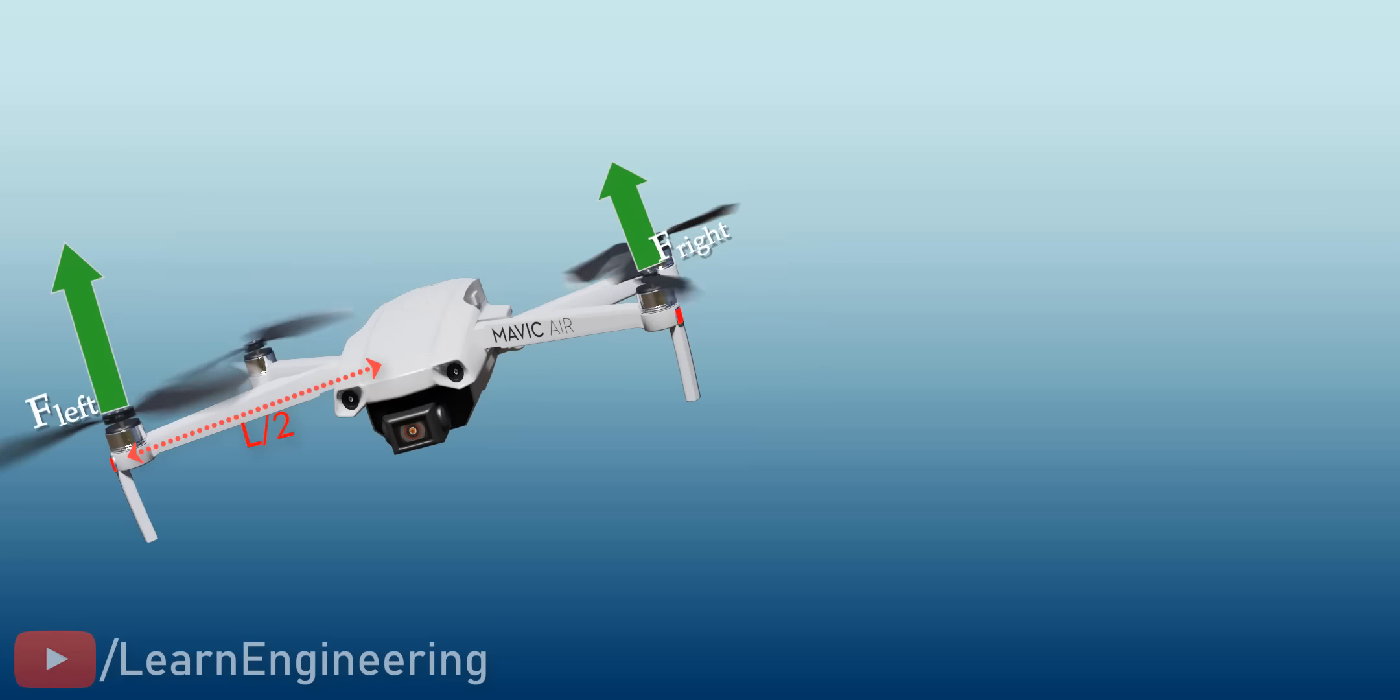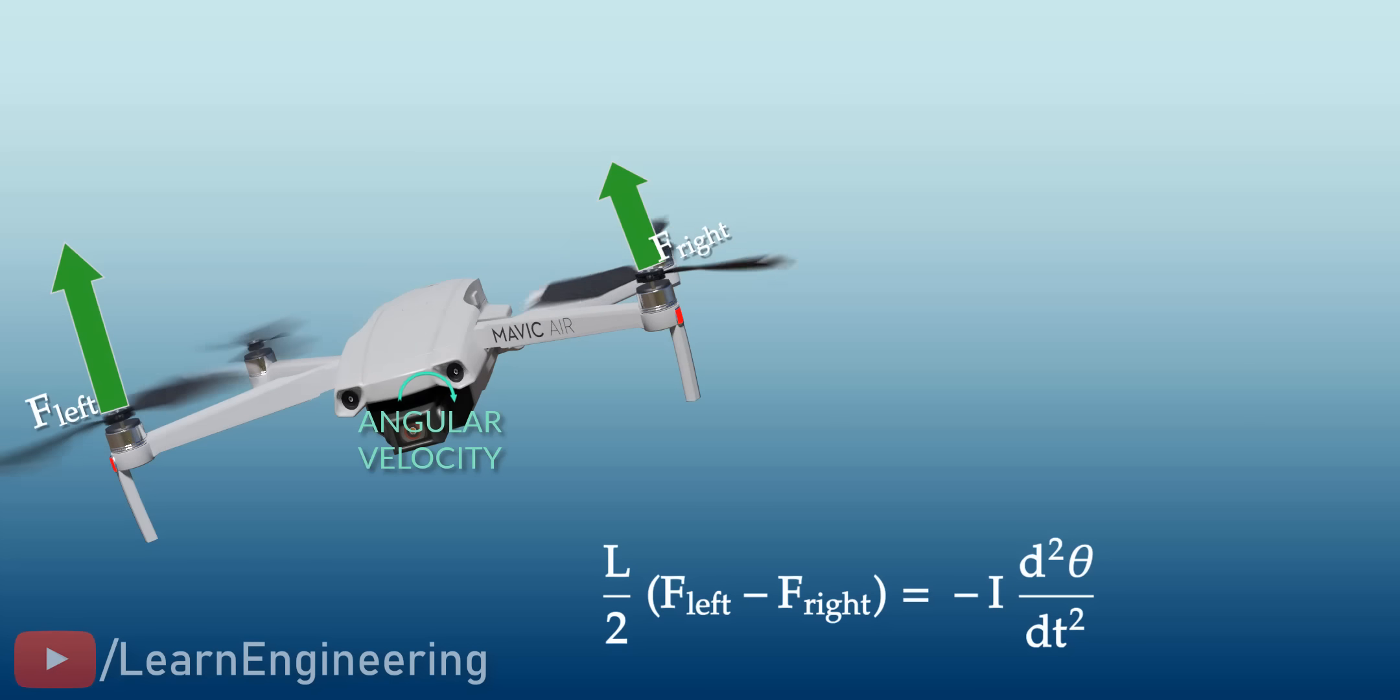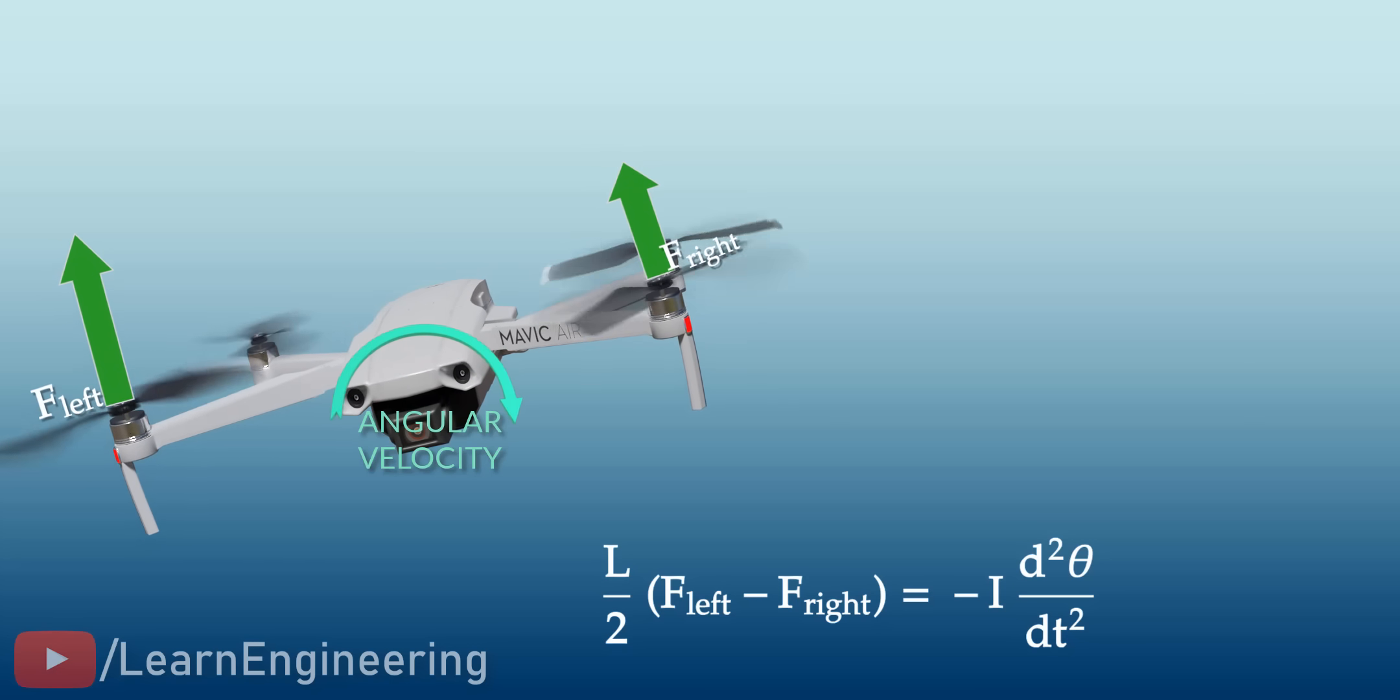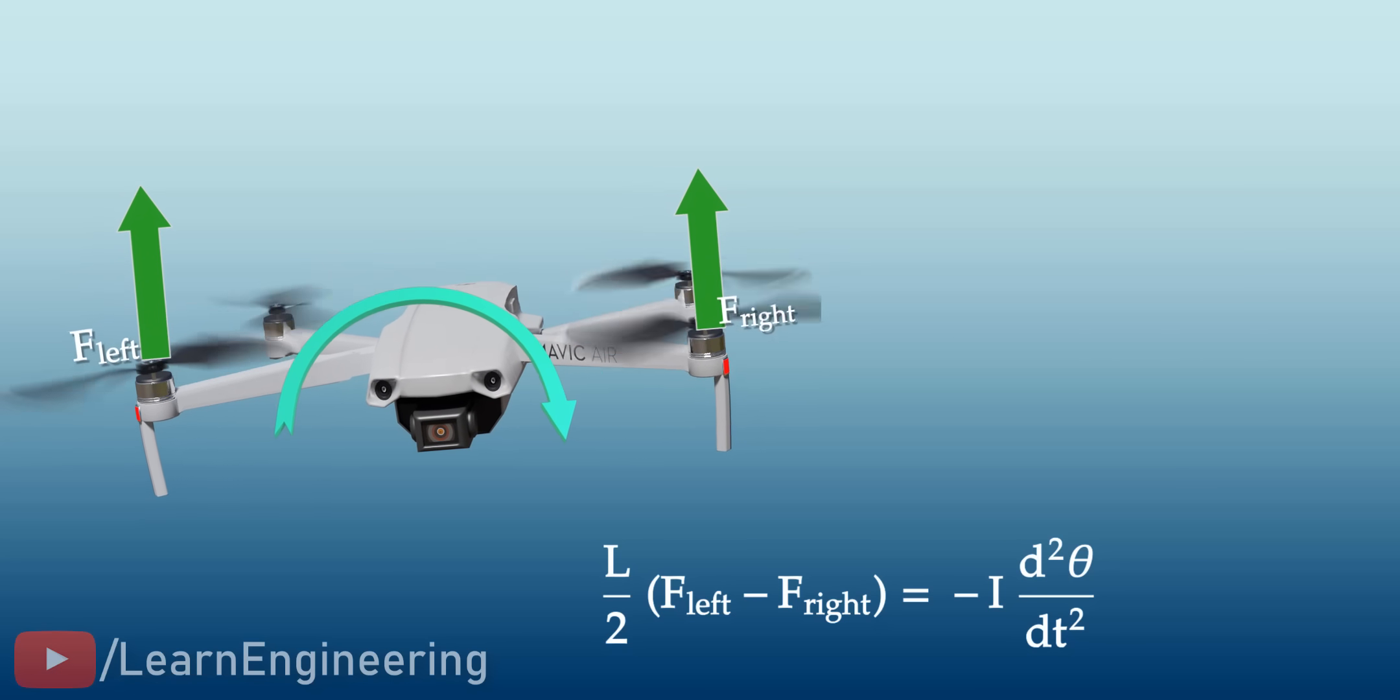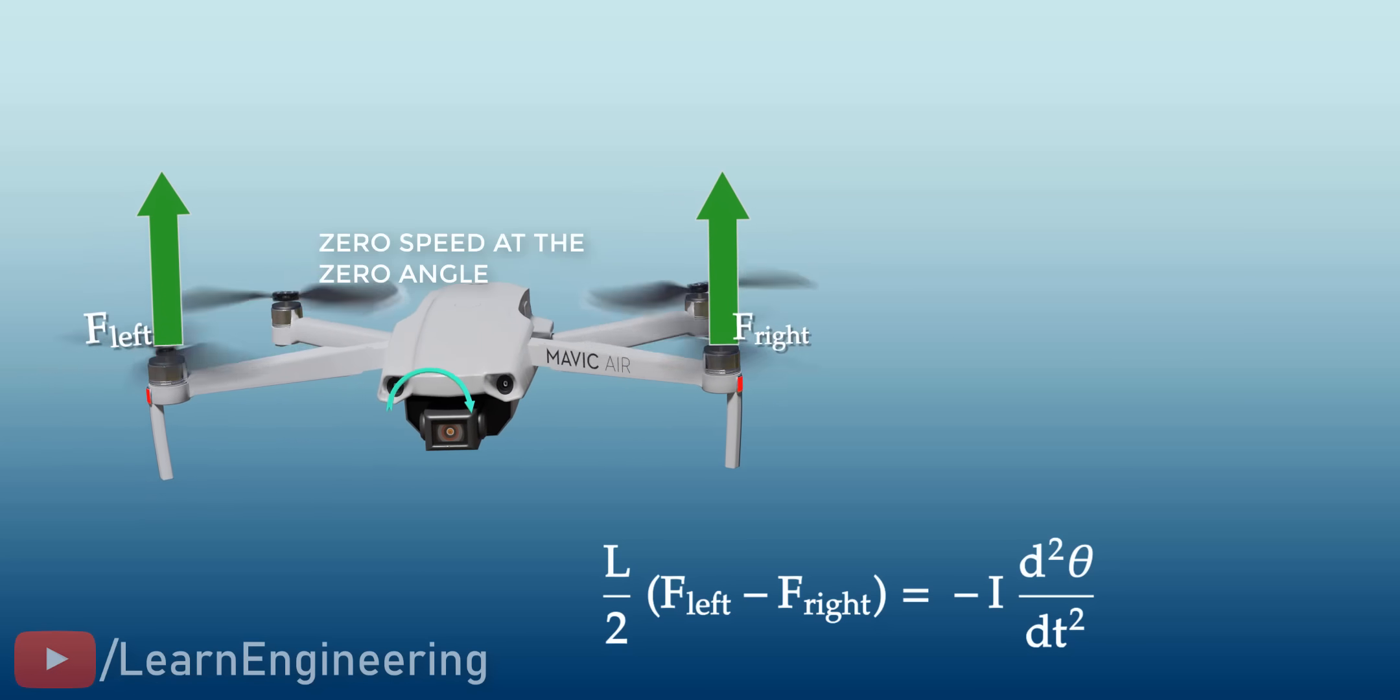Using a simple force analysis, the forces that the left and right propeller pairs have to produce can be connected to the angle, as shown. Don't worry if you can't understand all the variables in this equation. You just need to understand that the force values should vary with the error angle. However, this problem is not solved simply by making the error angle zero. You have also to make sure that the angular velocity of the drone at zero degree is zero.